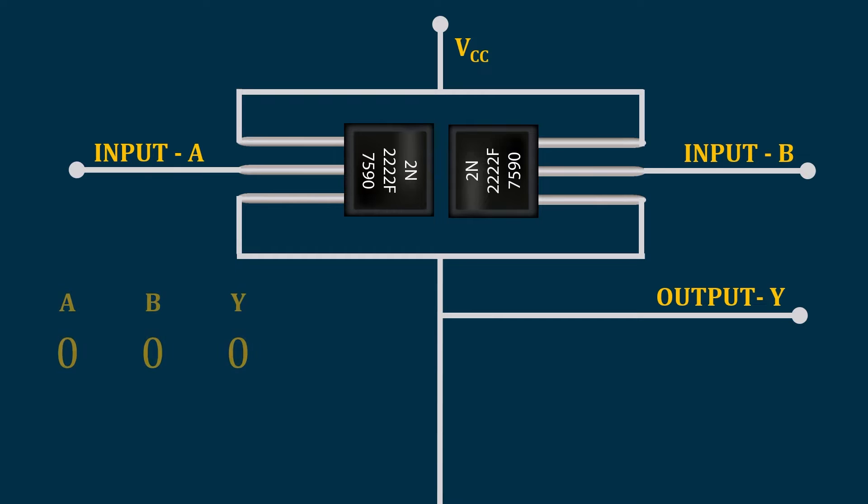When we give both inputs as 0, the VCC stays up to this point and it will not be reflected in the output. That is why when both inputs are 0, the output still remains 0.